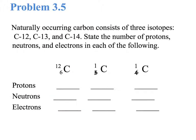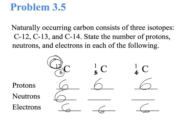For example, when we look at carbon-12, the atomic number is 6, so the number of protons is 6 for all of them, and the number of electrons is 6 for all of them. This carbon has mass number 12, so it has 6 neutrons — 6 plus 6 gives you 12. The next one has mass number 13, therefore it has 7 neutrons. And the last one has mass number 14, so it has 8 neutrons. Please note there is a small typo in the slide — it should be 13 and 14 written there.